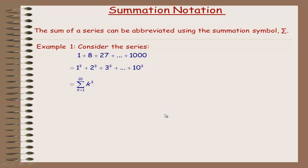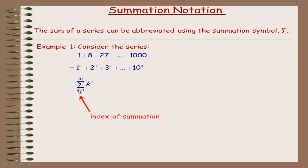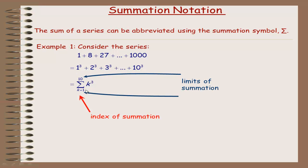When we write this as a summation, the k here is called the index of summation — you can think of it as a counter. It counts from 1 up to 10. The 1 and the 10 are called the limits of summation; they tell you what to start at and what to end at. The k cubed here is called the general term.